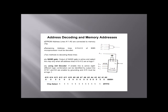Address decoding and memory addresses: The process of address decoding should result in identifying a register for a given address — we should be able to generate a unique pulse for a given address. For example, there are 12 address lines from A11 to A0 connected to the memory chip. The remaining address lines from A15 to A12 of the 8085 microprocessor must be decoded. There are two methods: first, by NAND gate, where the output is active and selects the chip only when all address lines A15 to A12 are at logic 1; second, by using a 3x8 decoder, where if the enable line is active, eight different logic combinations can be identified by the output lines, with A0 and A1 grounded and A15 must be at logic 1.